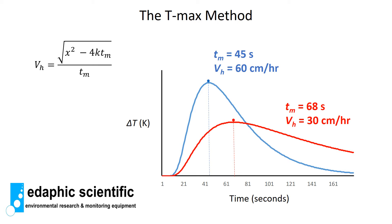Here are a couple of examples using the tmax method. The blue line represents a velocity of 60 centimeters per hour, where the time to maximum temperature rise was 45 seconds. The red curve represents a velocity of 30 centimeters per hour, where the time to maximum temperature rise was 68 seconds. Since we know the distance x, can measure the time to temperature rise, and can measure thermal diffusivity, we can put all these parameters into the equation to calculate heat pulse velocity.